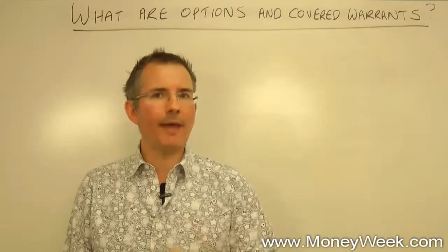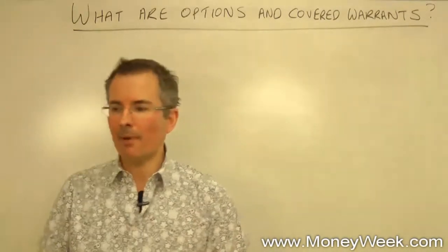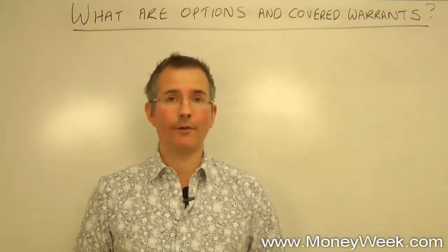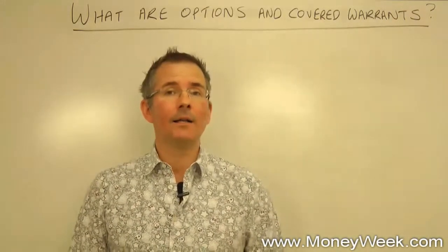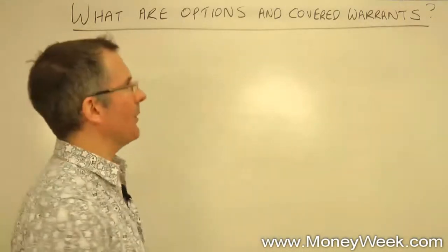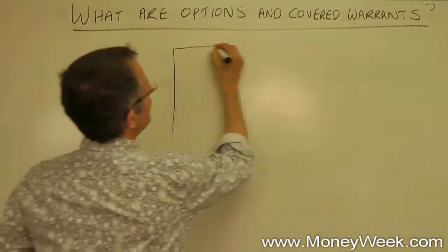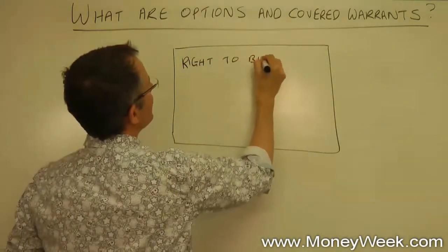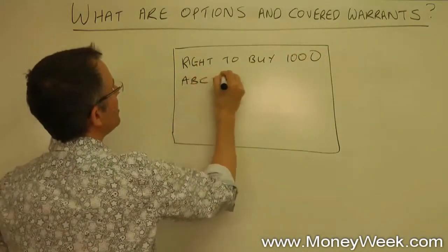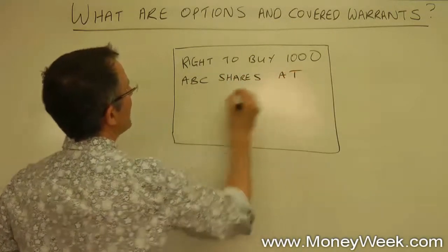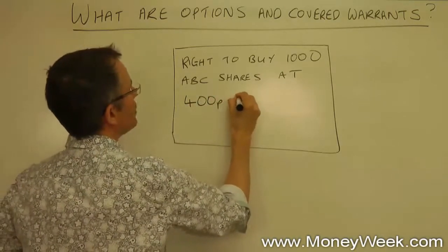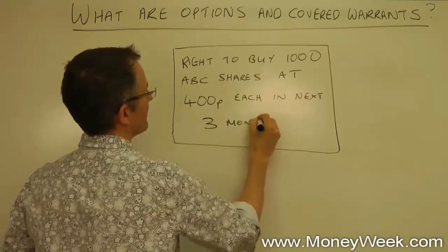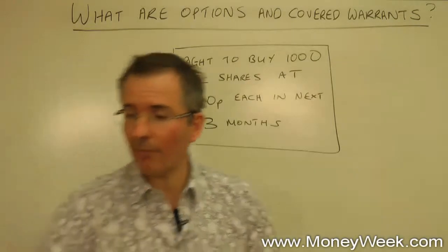We'll be looking at call and put options from two perspectives. Options in the old days were literally pieces of paper — you could either write the piece of paper and then sell it, or you could buy the piece of paper and hold it. The holder is another word for buyer and the writer is another word for seller. So if I was to write out an option on a piece of paper, it might say: this is the right to buy one thousand ABC shares at four pounds — that's 400 pence — each.